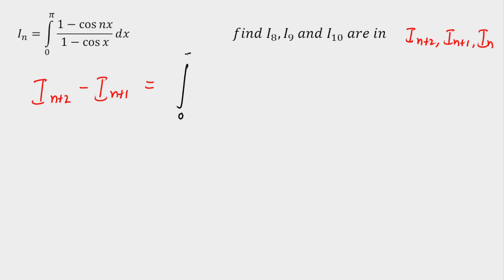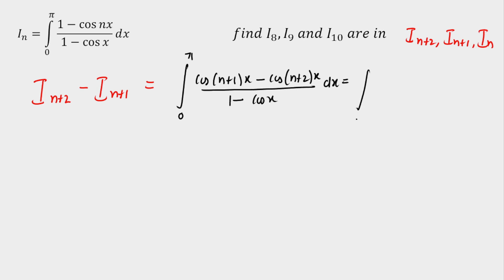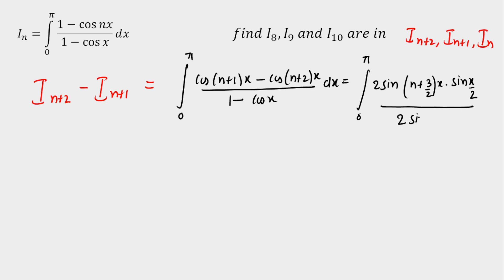Integrating I(n+2) - I(n+1) from 0 to π, we get [cos((n+1)x) - cos((n+2)x)] / (1 - cos(x)). Applying the formula cos C - cos D = 2 sin((C+D)/2) sin((D-C)/2), we get 2 sin((n + 3/2)x) · sin(x/2) in the numerator. Since 1 - cos(x) = 2 sin²(x/2), the 2 and sin(x/2) terms cancel, leaving a clean integrand with sin((n + 3/2)x).